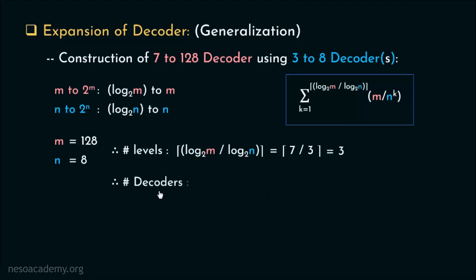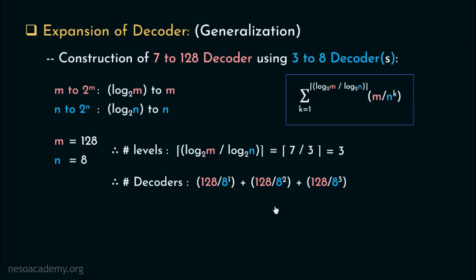So the number of decoders in each level, following this formula, is: basically in the first level we need 16, in the second we need 2, and 1 decoder in the last one. In total, 19 3-to-8 decoders are used to construct a single 7-to-128 decoder.